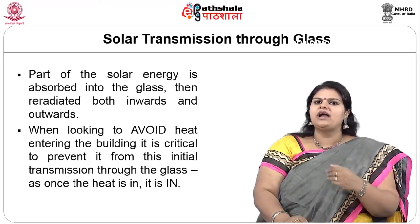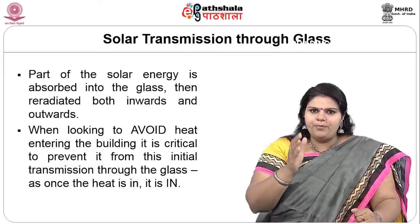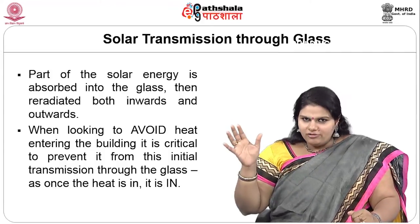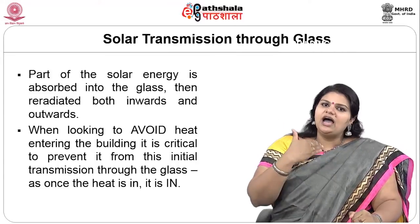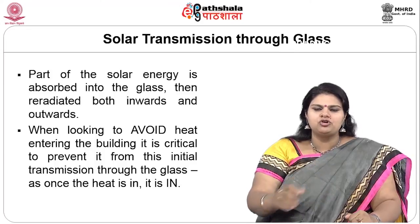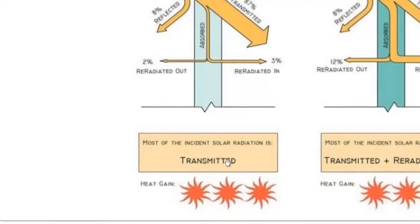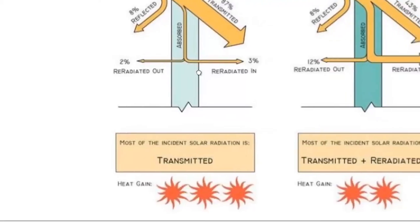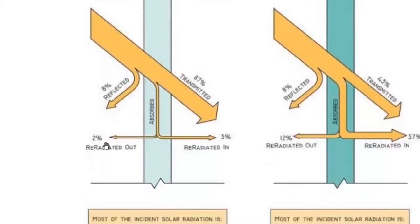In passive design, the best approach is to control the heat and light that enter the building, because once something enters it becomes very difficult to control. Looking at solar transmission through varying glass types: for clear glass, about 2% is re-radiated, 8% reflected, and 87% transmitted — so most incident solar radiation is transmitted and heat gain is quite high.